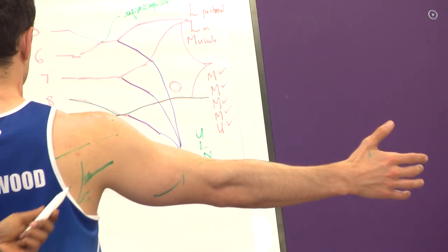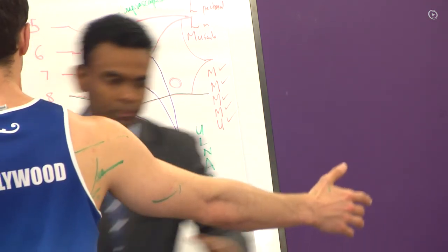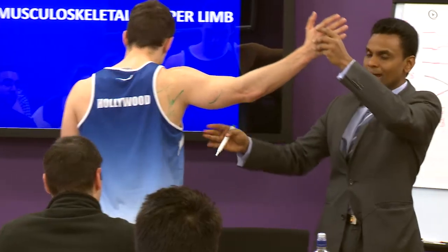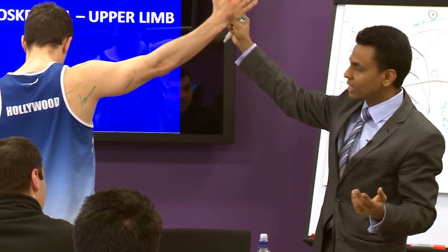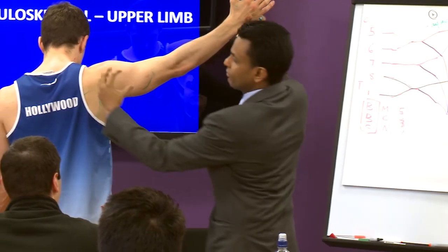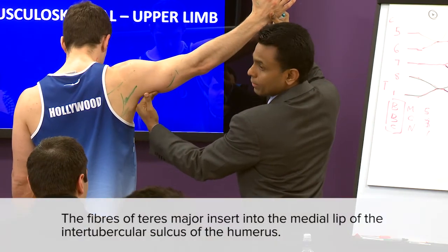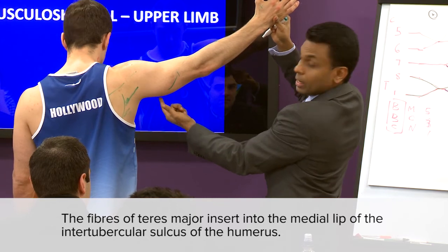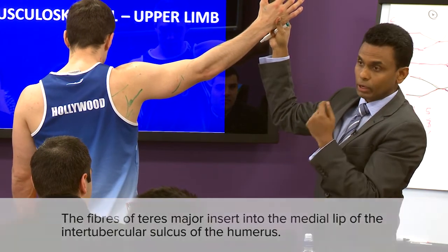Think about it — looking at the arm, the teres major comes from there. It has to be in the shaft of the humerus. Because if it's not going to the shoulder it has to come here. So it inserts into the medial lip of the bicipital groove of the humerus.